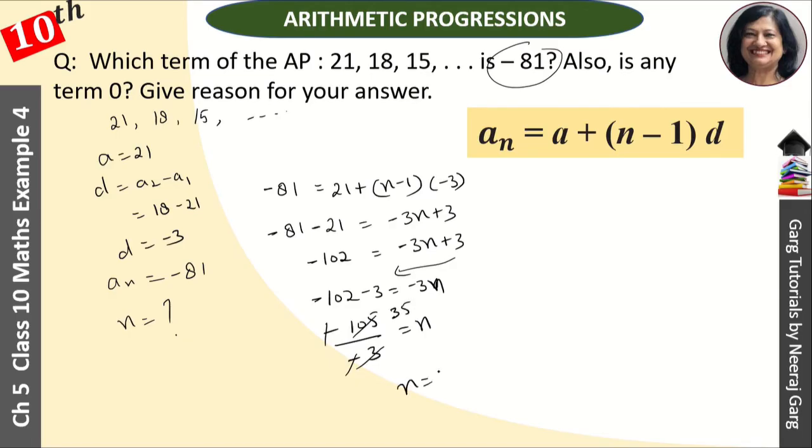So n = 35. We got our answer - minus 81 is the 35th term. Which term is it? The 35th term. This is our first answer.